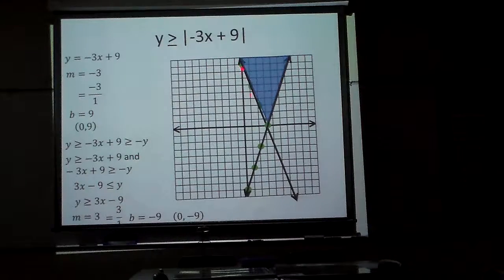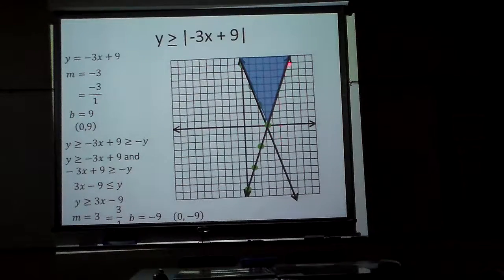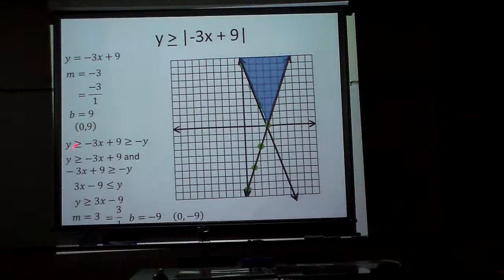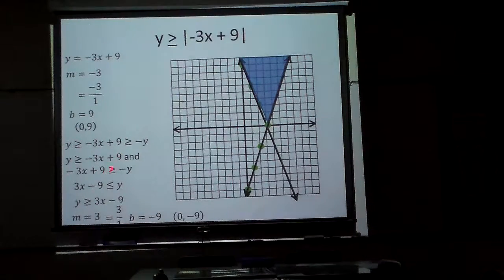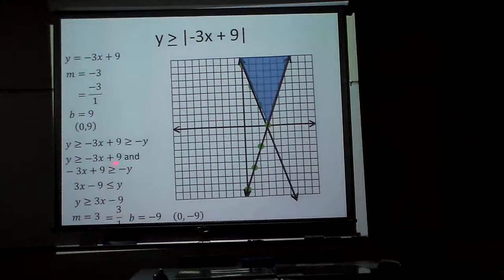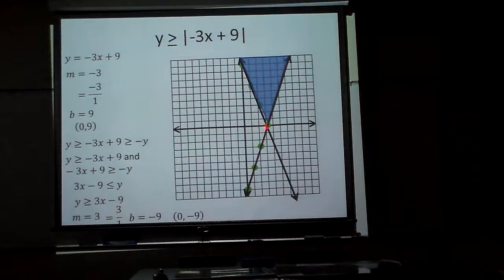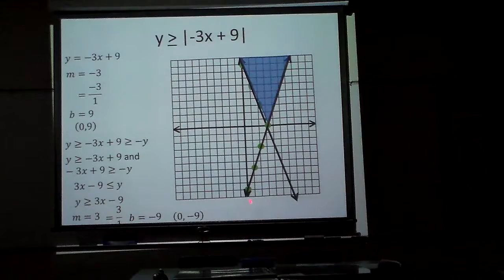Once again, pretend it's an equal, graph it, then just reflect it across that line right there is the easiest way to do it. Or you have to set up what I call the positive answer and the negative answer and then solve. And I think it's just easier to graph this line then reflect it than to actually graph the two different lines.